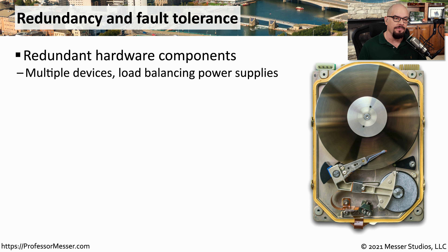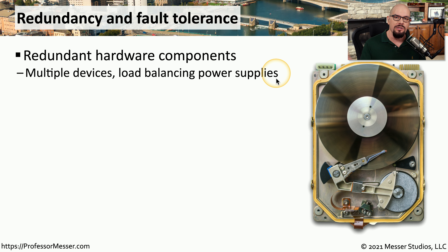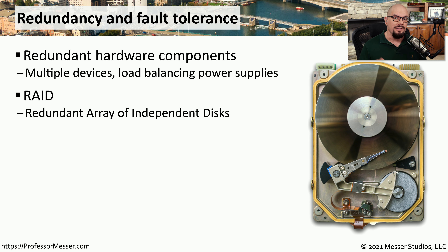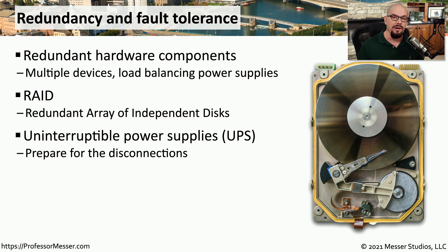When designing these fault tolerance systems, we often consider redundancy as an easy way to provide that fault tolerance. This means that you would have multiple components, and if one component was to fail, you could use the other component instead. For example, in a server you may have multiple power supplies, and if one of those power supplies was to fail, the other one continues to operate and the server continues to be available. We can have the same redundancy through the Redundant Array of Independent Disks, or RAID. By using certain RAID configurations, we can lose a drive but still maintain the uptime and availability because we have other drives and redundancy methods built into the RAID array.